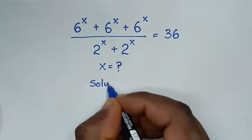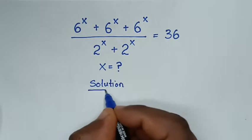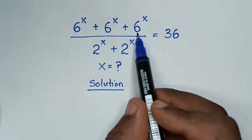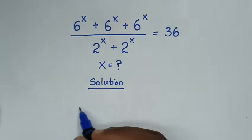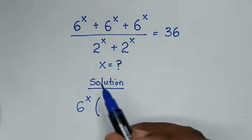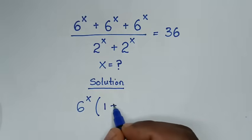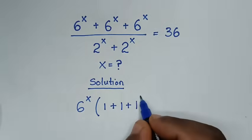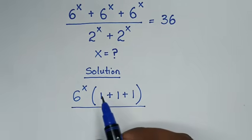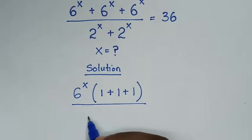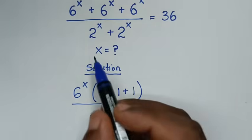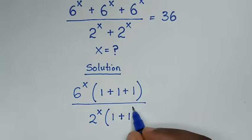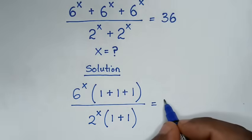Now, solution. In the first step, in the numerator, this 6 power x plus 6 power x plus 6 power x — 6 power x is common. So we'll take 6 power x out of the bracket: 6^x divided by 6^x is 1, plus 1, plus 1. Then over the denominator, 2 power x is common, so we'll take 2 power x out of the bracket: 2^x divided by 2^x is 1, plus 1. This equals 36.